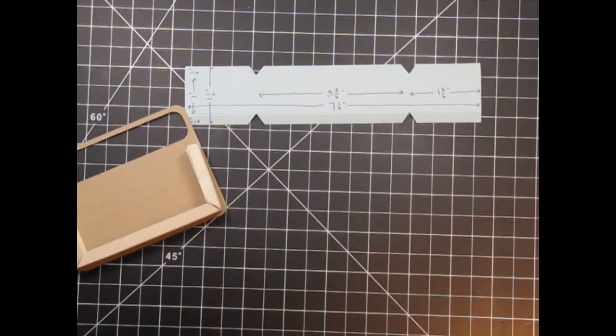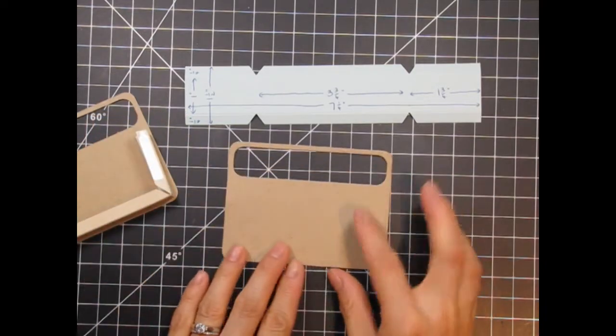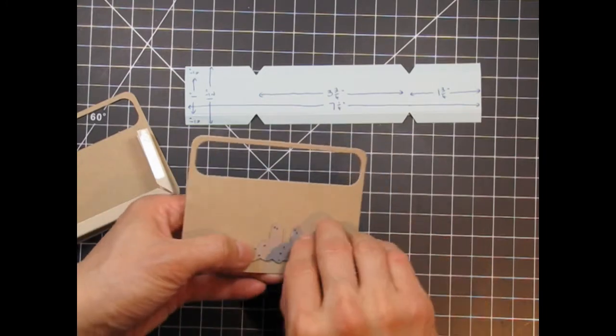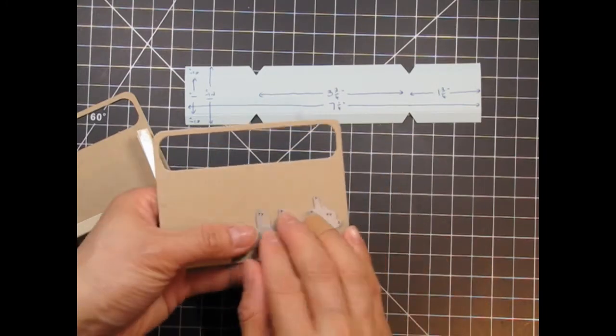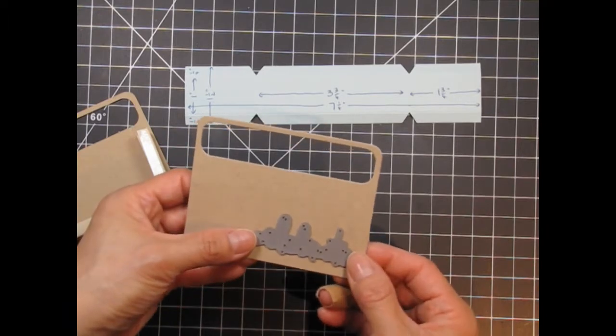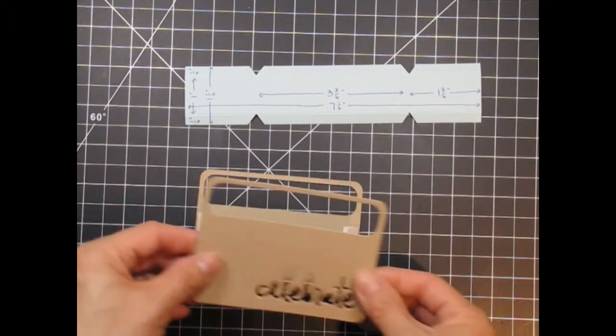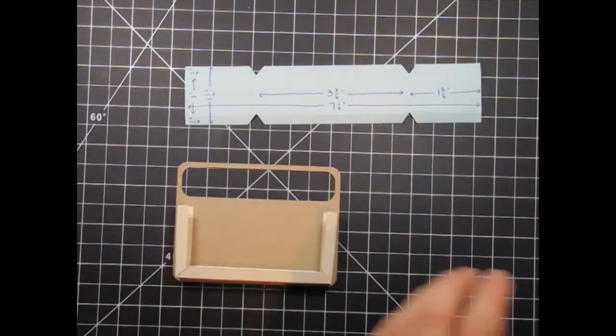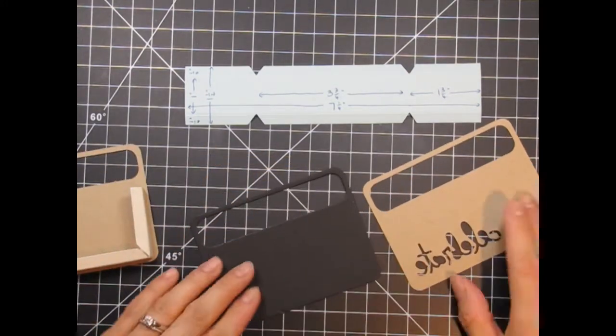Next I'm going to embellish the front of the box. This time I'm going to use the celebrate word die from the birthday words dies and die cut it from the front panel of the box. I didn't think about where it was relative to the adhesive panel so my solution was to die cut a black panel and adhere it to the back of the existing panel.